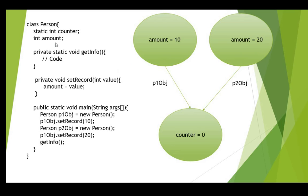For example, if you have code that calculates interest, the interest rate may change later on. Instead of making changes throughout your whole code, you can just change that one static variable. This way you can use a static variable without needing an object to access it. Similarly, you can access a static method by just calling its name directly, without using any object, because it belongs to the class.